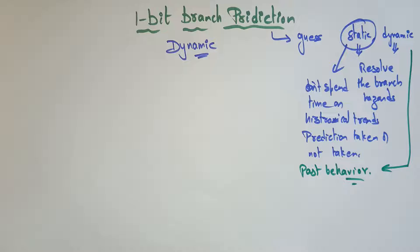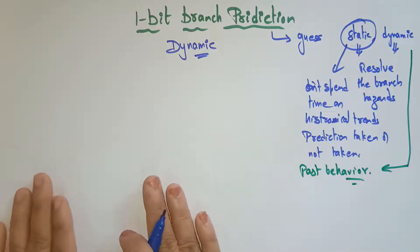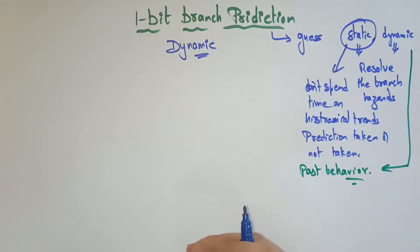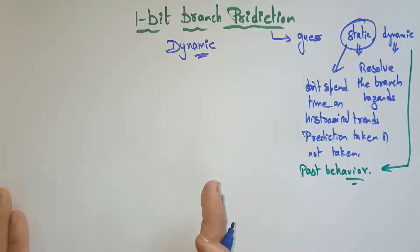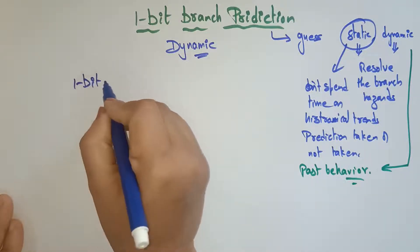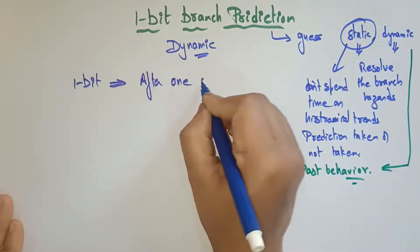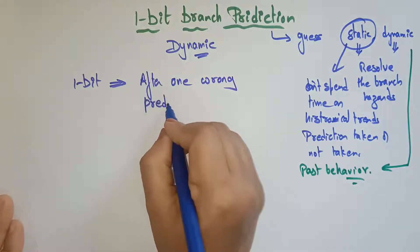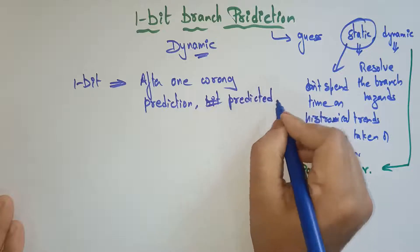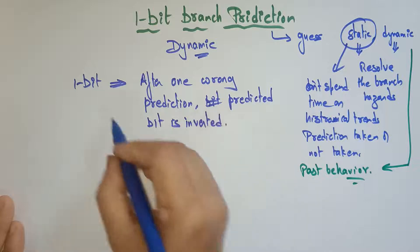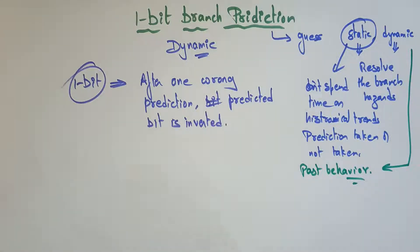We are talking about dynamic branch prediction. In the previous video I explained 1-bit dynamic branch prediction by taking an example, and in this video I am taking another example. In 1-bit branch prediction, if we mispredicted once about the branch, we change our mind instantly about the next prediction. After one wrong prediction, the predicted bit is inverted — taken is converted to not-taken and not-taken is converted to taken.